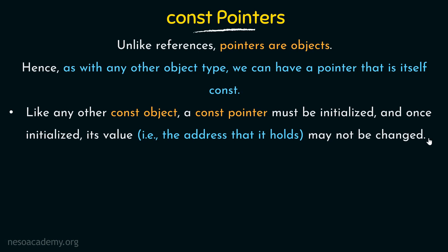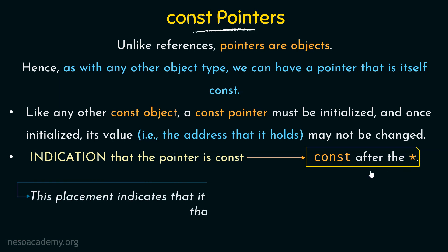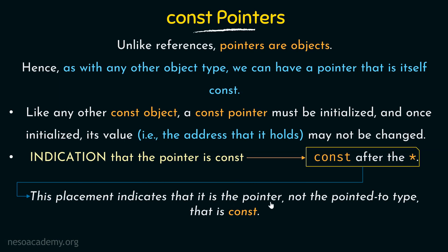How can we tell from the syntax that it is a constant pointer itself, not just a pointer pointing to a constant object? The indication is that the const keyword will appear after the asterisk symbol. If it is a constant pointer itself, the const keyword will appear just after the asterisk symbol. This placement indicates that it is the pointer, not the pointed-to type, that is constant.